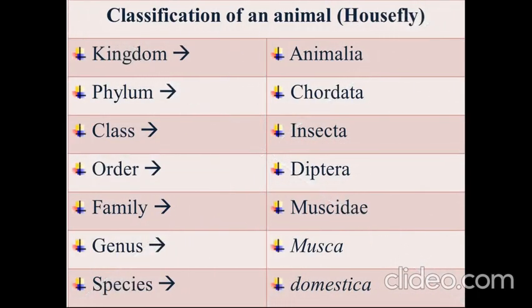Let's study the classification of an animal — the housefly. Housefly falls under kingdom Animalia, phylum Arthropoda, class Insecta, order Diptera, family Muscidae, genus Musca, and species domestica.